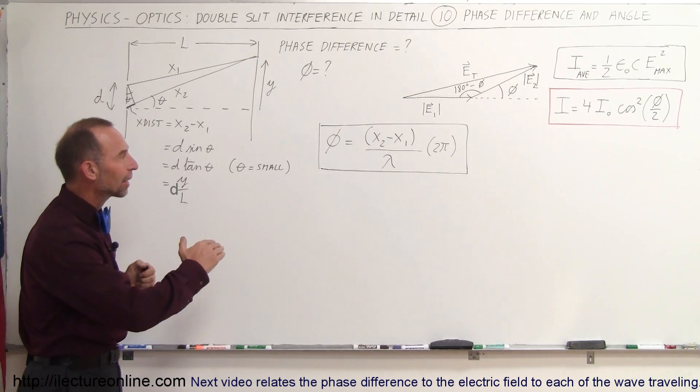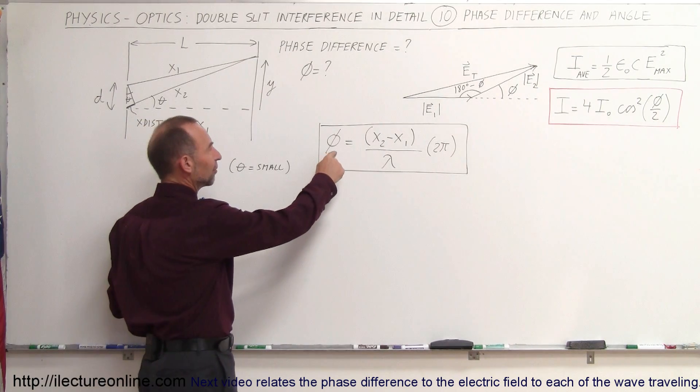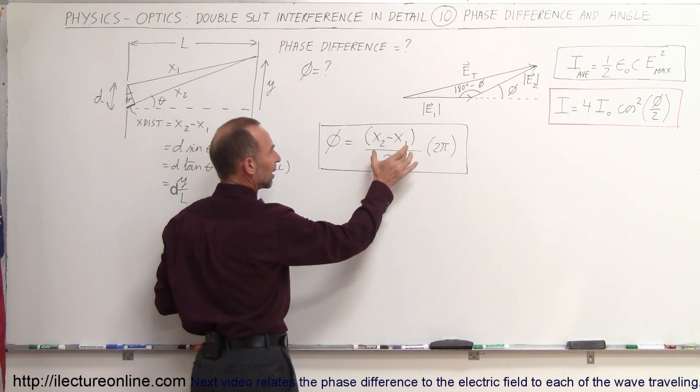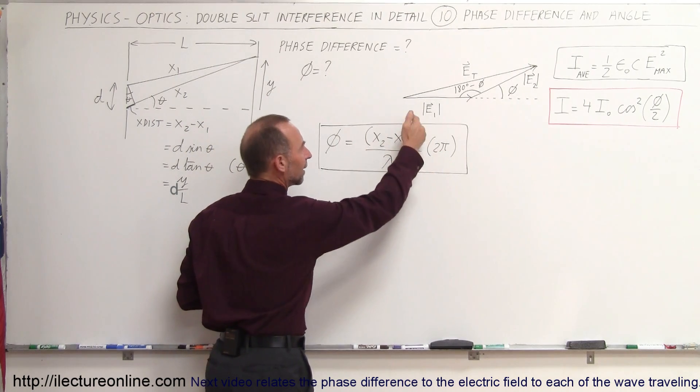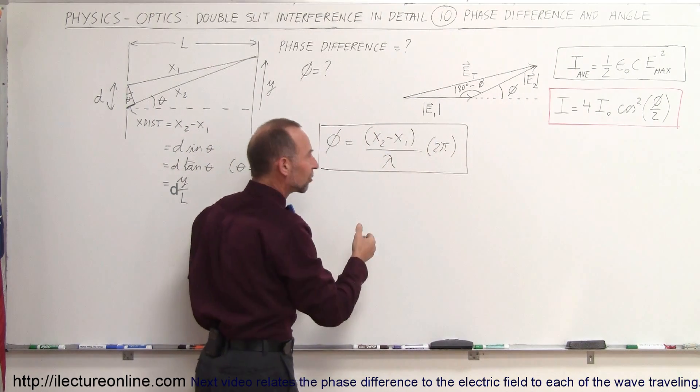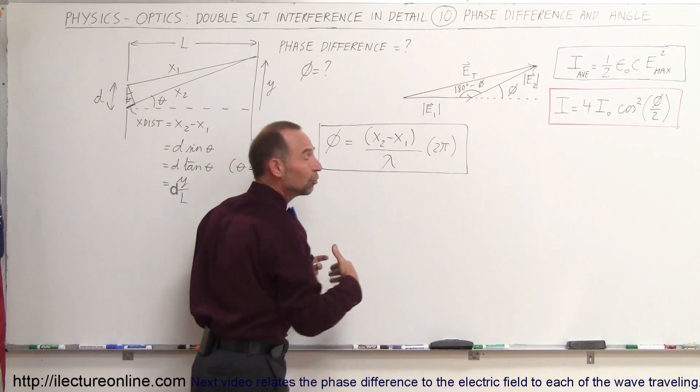So what we're going to do here is go back to our understanding that the phase difference is equal to the path length difference divided by the wavelength times 2 pi. This simply becomes a fraction. It'll be a fraction of 2 pi, 2 pi being, of course, complete phase or 360 degrees.